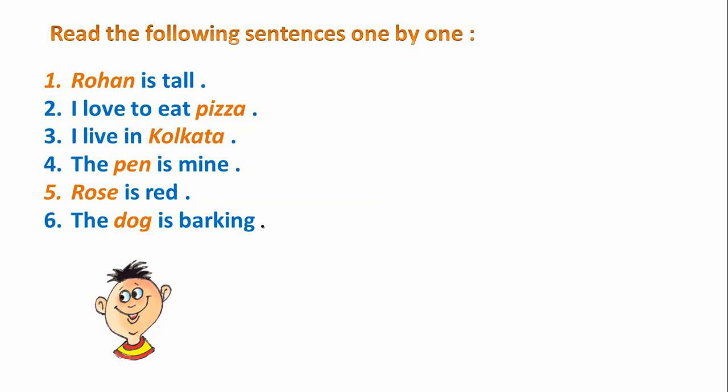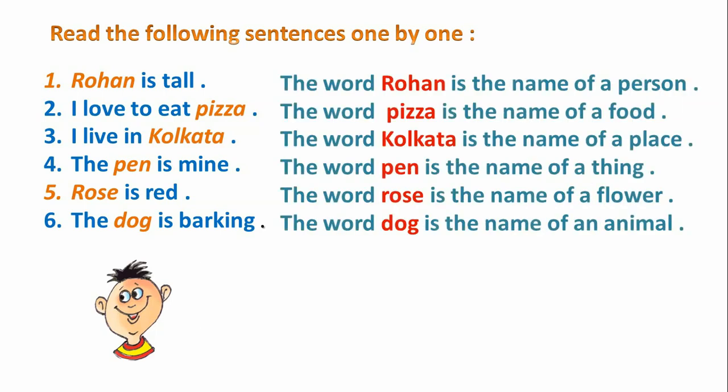Some of the words are written in red. In the first sentence, the word Rohan is the name of a person. In the second sentence, I love to eat pizza — the word pizza is the name of a food. In the third sentence, the word Kolkata is the name of a place.